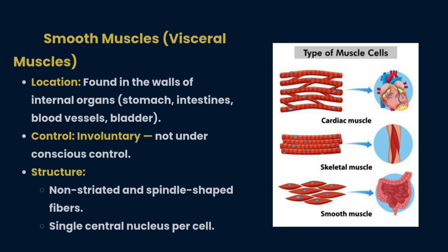The third type is smooth muscle, otherwise called visceral muscle. It is found in the walls of internal organs like the stomach, intestines, blood vessels, and bladder. It does not work under conscious control, making it involuntary. Structurally, it is non-striated with spindle-shaped fibers and a single central nucleus per cell.